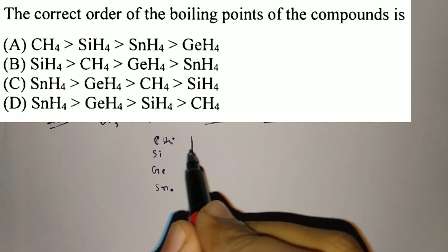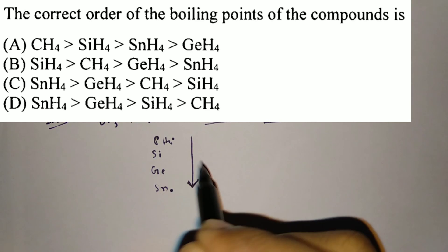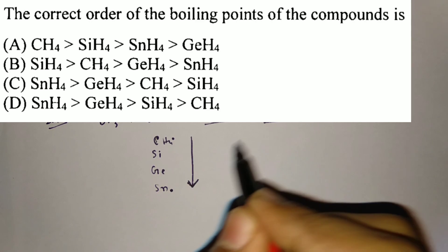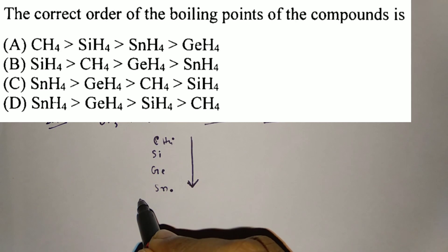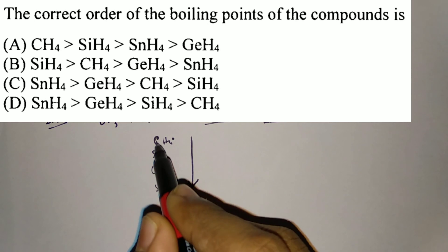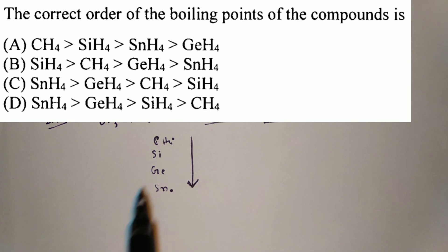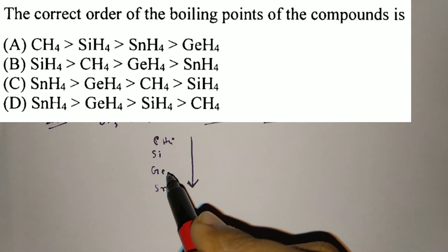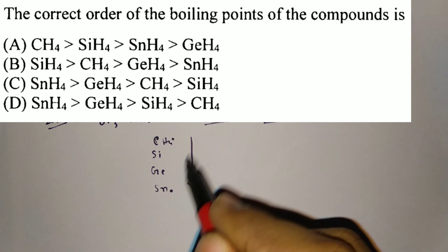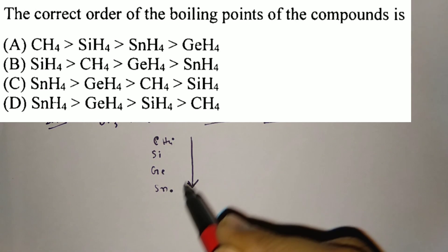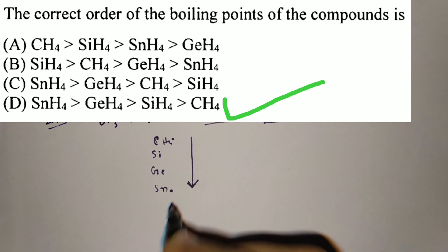To answer this type of question, there is another trick — look at the answer options. The size of C, Si, Ge, Sn gradually increases down the group. There is only one option in which this increasing trend is maintained; in the other three options this trend is not maintained. So option D is the correct answer.